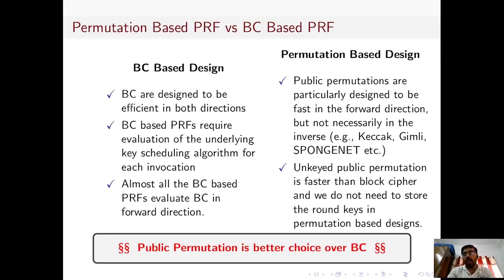Moreover, all the block-cipher-based PRFs that we know of evaluate the block cipher only in the forward direction, not in the inverse direction. So from this perspective, we can say that a block cipher is somewhat an over-engineered primitive for those modes of operation that do not invoke the inverse of the block cipher. In those situations, a public permutation is a better choice over a block cipher as a primitive.